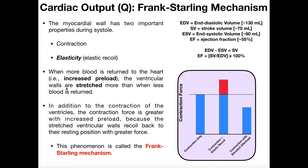The myocardial walls are elastic and have a recoil property — you can stretch them, but they're going to bounce right back. That bouncing back has the same effect as a contraction. So in addition to the contraction of the ventricles from the cardiomyocytes, the contraction force is greater with that increased preload because the stretched ventricular walls recoil back to resting position with greater force. The more you stretch those walls, the stronger they recoil, pushing blood through the aorta with more force. This greater force of contraction — a greater stroke volume — is called the Frank-Starling mechanism.